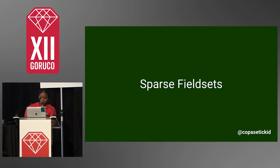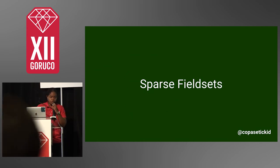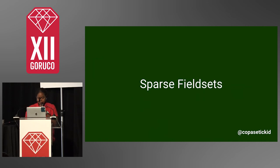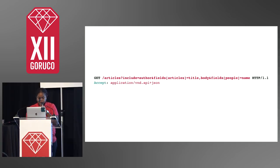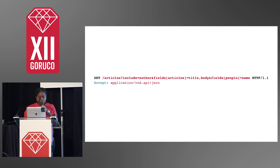Then there are sparse field sets. If you use GraphQL, this is something you'd find there too — allowing you to only query for specific fields you want from a particular model. This is done with a query param, and here the fields I only want back from an article are the title and body. You can do the same thing with associations — for example, only returning the name of the people related to that.